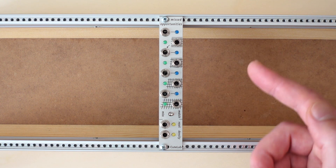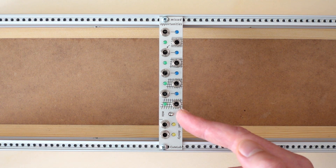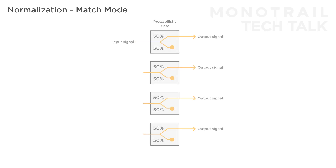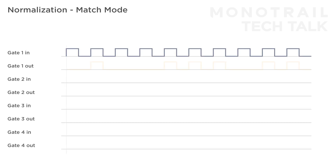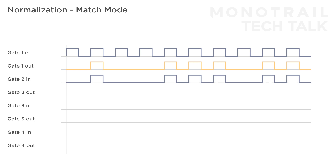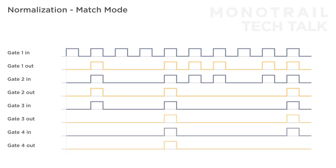You can set the behavior of this normalization with this switch, selectable between two modes: miss and match. In match mode, signals that are passed on by a gate are normaled to the input of the next gate. So for example, if you feed the module a steady clock with a 50-50% chance, the result of the first gate could be something like this. Then that exact output signal is fed into the input of the second gate. That gate creates another 50-50 chance based pattern, which in turn is passed on to the third gate, and so on.